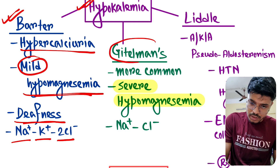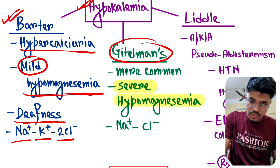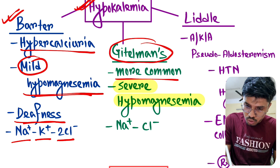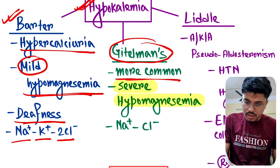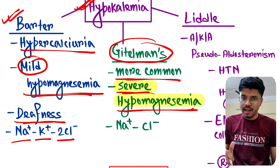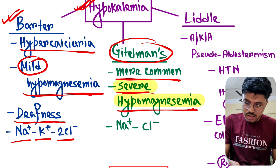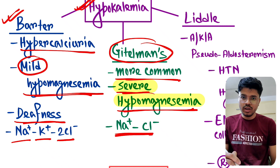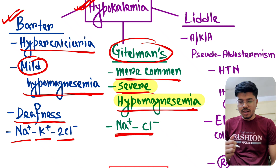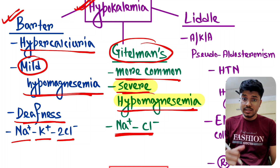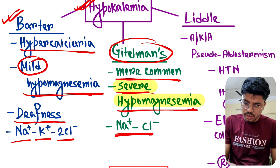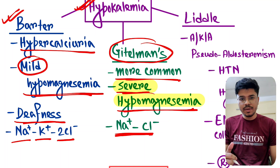Gitelman syndrome: the common feature is hypokalemia, and it is more common than Bartter. There is severe hypomagnesemia, and the associated channel is Na+/Cl-. So in Gitelman syndrome, there is hypokalemia, severe hypomagnesemia, and the associated channel is Na+/Cl-.